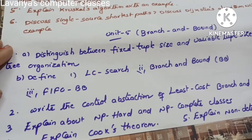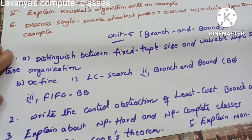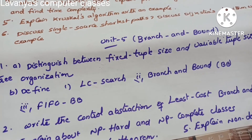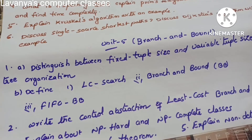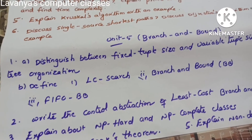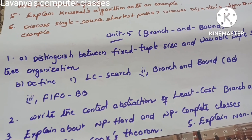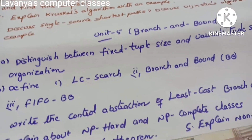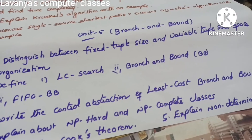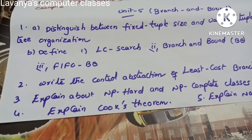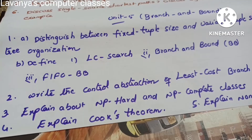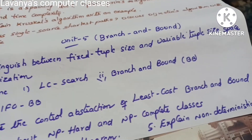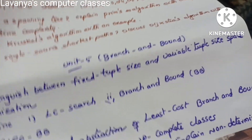Unit 5 is Branch and Bound. Distinguish between fixed tuple size and variable tuple size tree organization, and define LC search and branch and bound. Branch and bound is also known as BB or FIFO BB. Write the control abstraction of least-cost branch and bound, and explain NP-hard and NP-complete classes, Cook's theorem, and non-deterministic algorithms.